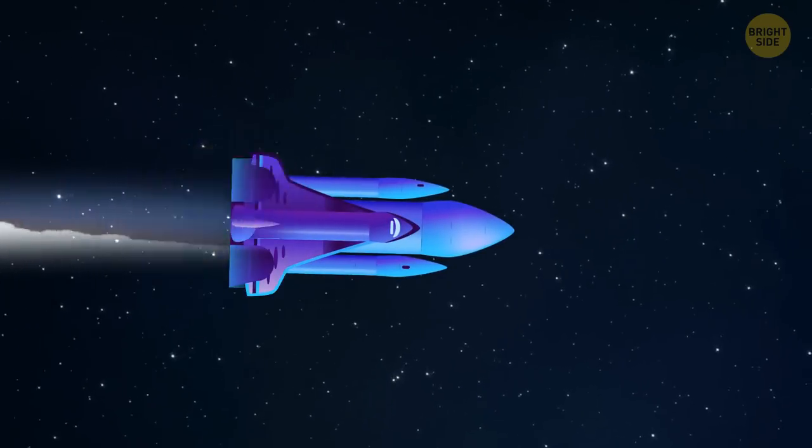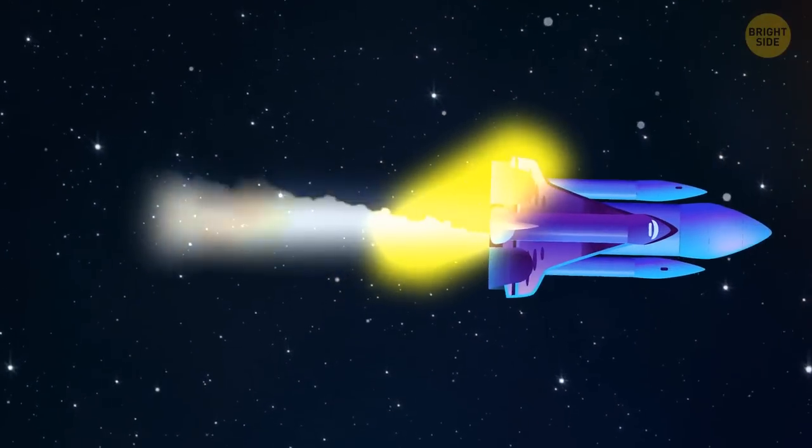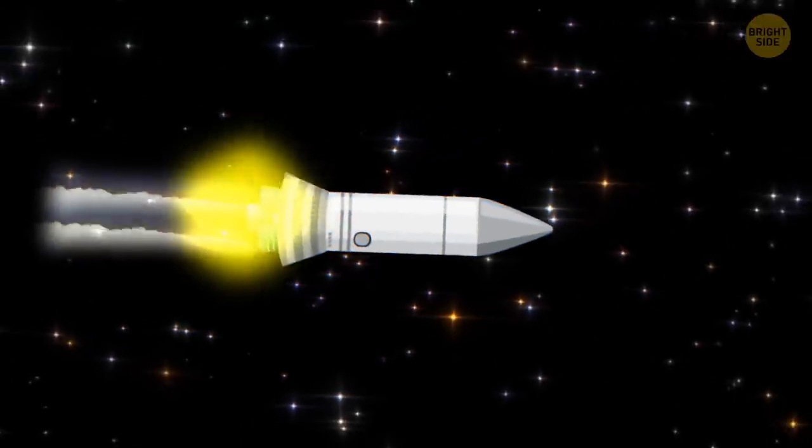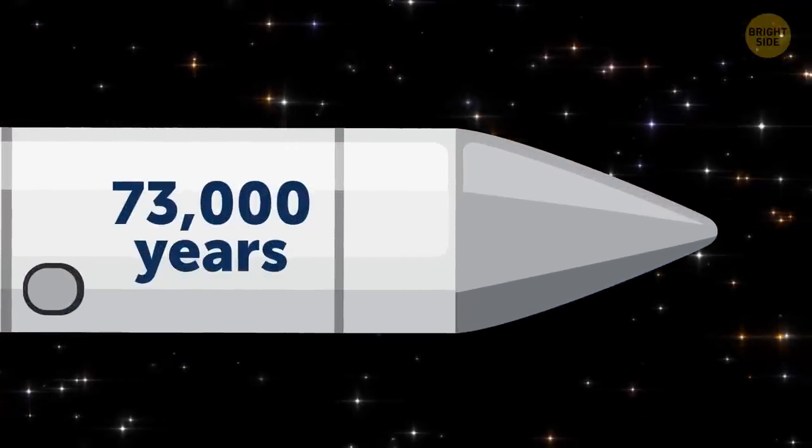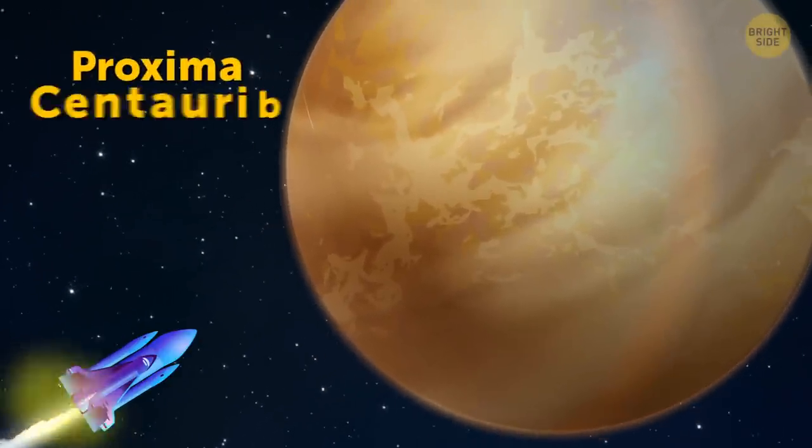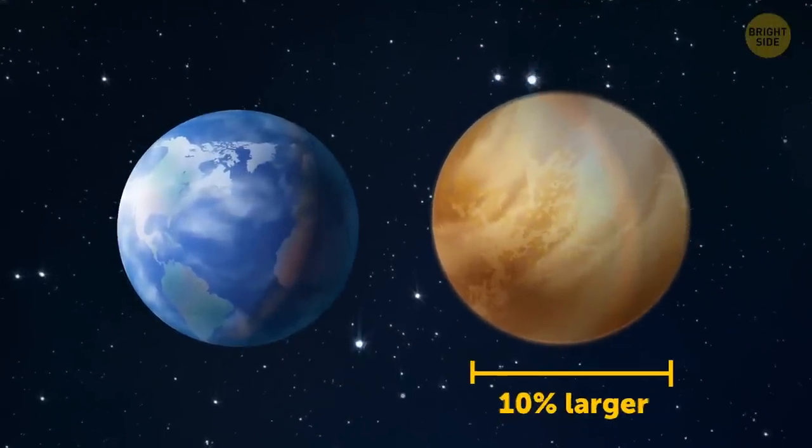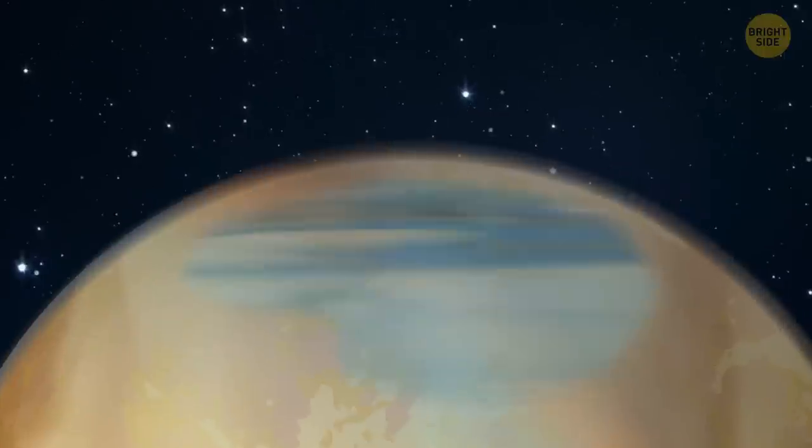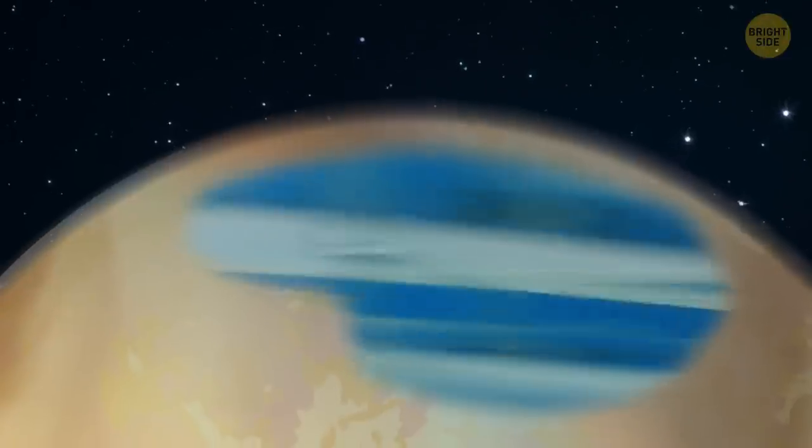Now, we're approaching the nearest star to our solar system. It's Proxima Centauri. We're so far from home that even light needs more than four years to travel this distance. If we used a traditional rocket, the trip would take us 73,000 years. The reason we wanted to get here was because of an Earth-like planet called Proxima Centauri b. It's 10% larger than Earth and slightly heavier. It lies in the habitable zone of its host star. It means that water might exist on the planet in its liquid state, and there can be life that forms here.